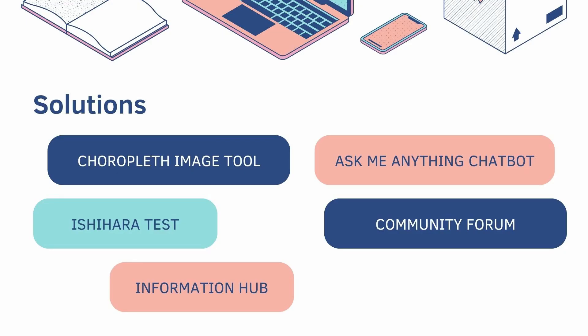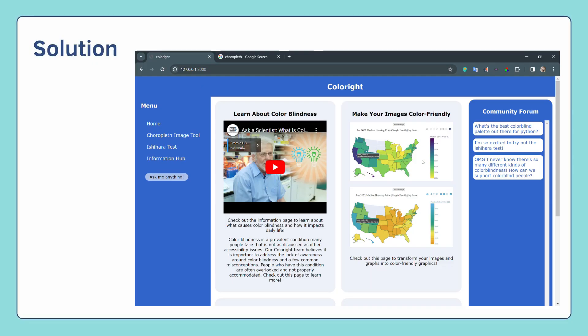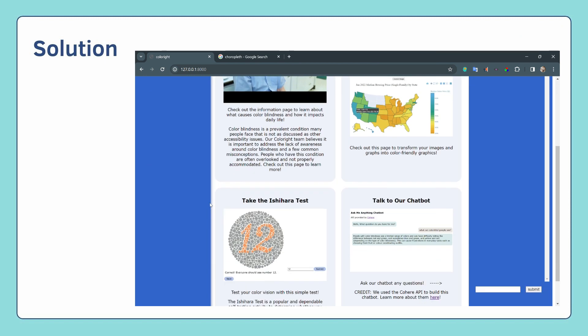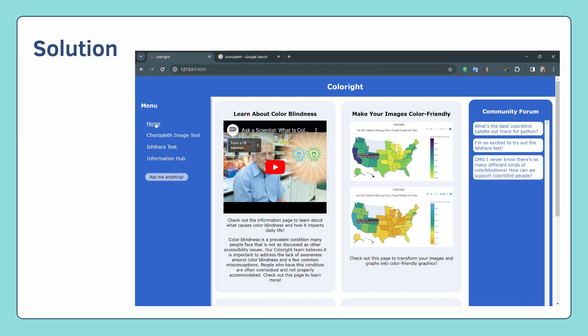Our web has five main features: the colorblind image tool, an Ishihara test, Ask Me Anything chatbot, community forum, as well as an information hub to spread awareness of this issue. Users can browse all the features of our website at the home page.